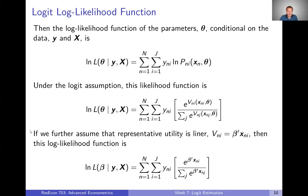One thing we'll do often in this class to further simplify is to assume that representative utility is linear. For all of these v's, we can plug in just beta times x instead of v, to more specifically represent what utility looks like. We can then see even more clearly how we have the log-likelihood of our parameters — we'll call them betas now instead of thetas. The log-likelihood of our parameters conditional on our observed outcomes and observed data is a function of our y's, x's, and our betas.